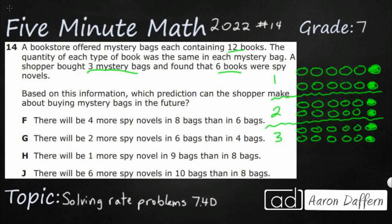So, answer choice F says there will be four more spy novels in eight bags than in six bags. With two spy novels per bag: eight bags gives 16, and six bags gives 12. So there will be four more spy novels in eight bags than in six bags — 16 is four more than 12. That looks pretty good.